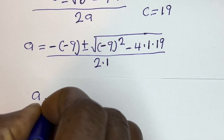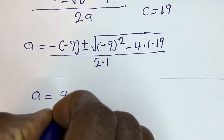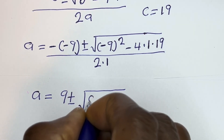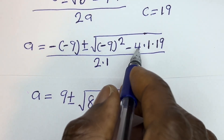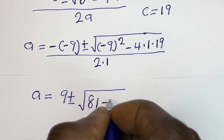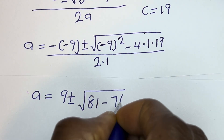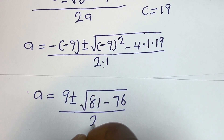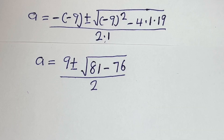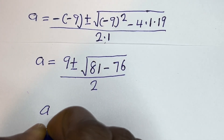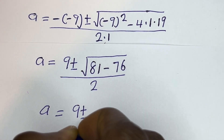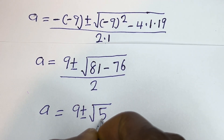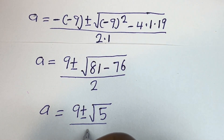So a equals minus minus 9, which is 9, plus or minus the square root of (minus 9) squared — that is 81 — minus 4 times 1 times 19, which is 76. So we have 9 plus or minus the square root of 81 minus 76, which is 5, all divided by 2.